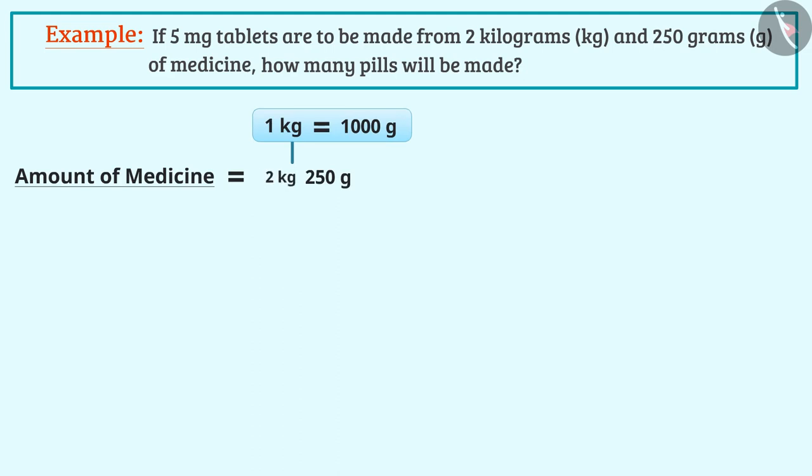1 kg is equal to 1000 g. Thus, 2 kg is 2000 g. By combining it with 250 g, you will get 2250 g.